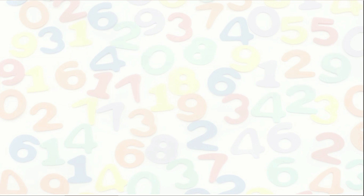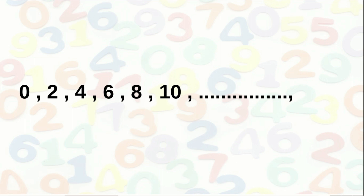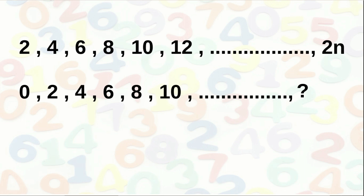Next, consider the sequence 0, 2, 4, 6, 8, 10, etc. It starts with 0 and 2 is added repeatedly. Comparing with the sequence of multiples of 2, the terms of 0, 2, 4, 6, 8, 10, etc. are got by subtracting 2 from the corresponding terms of the even number sequence. Therefore the nth term is 2n − 2.